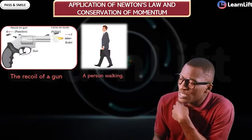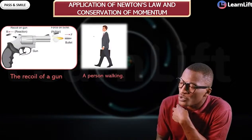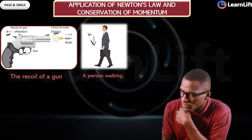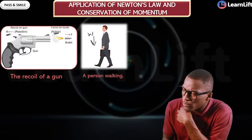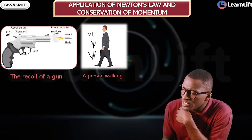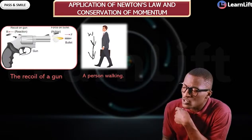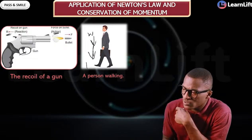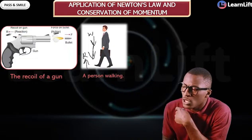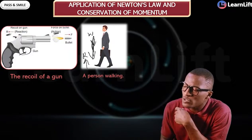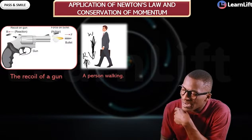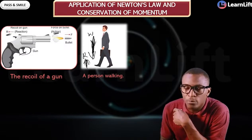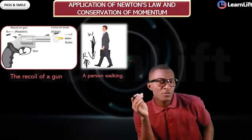Number two is a person walking. This person has a force called their weight. The weight of the person is acting downward on the ground. The ground also exerts a reaction force back upward. Action and reaction are equal but opposite.